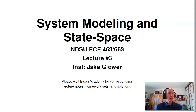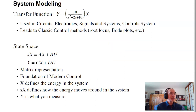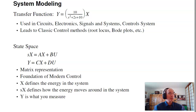Welcome to lecture number three for ECE 463 Modern Control, System Modeling and State Space. For system modeling, part of the trick is how to come up with a transfer function for a system. For example, a transfer function might be in the following form.